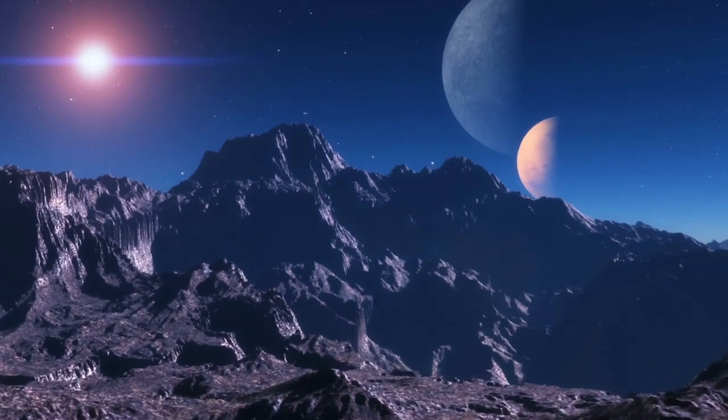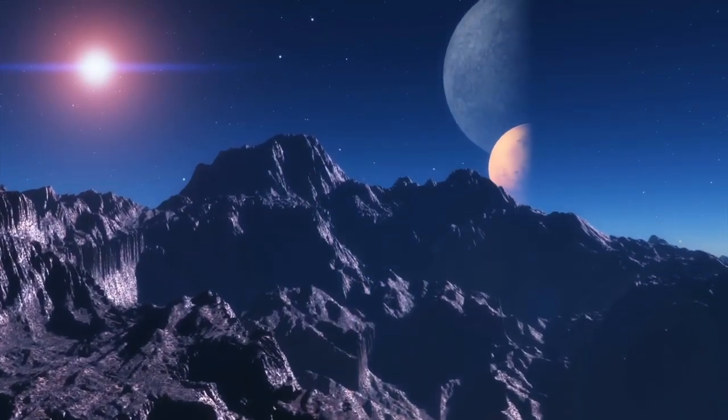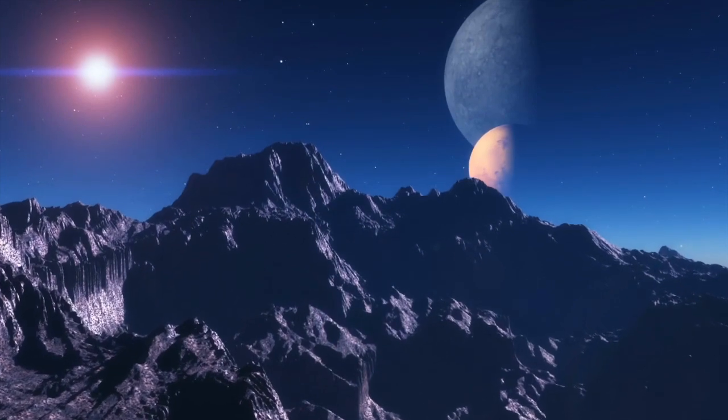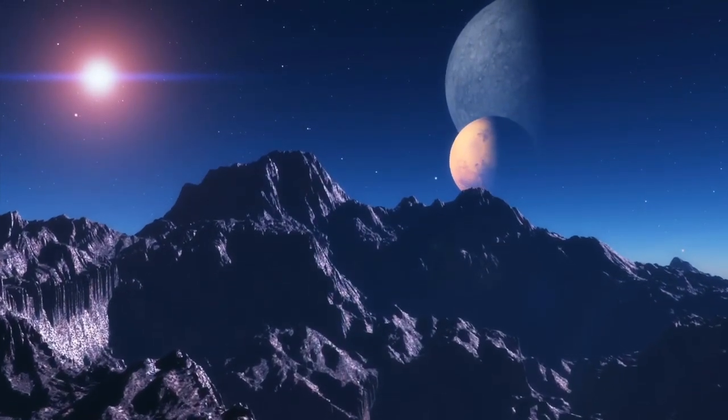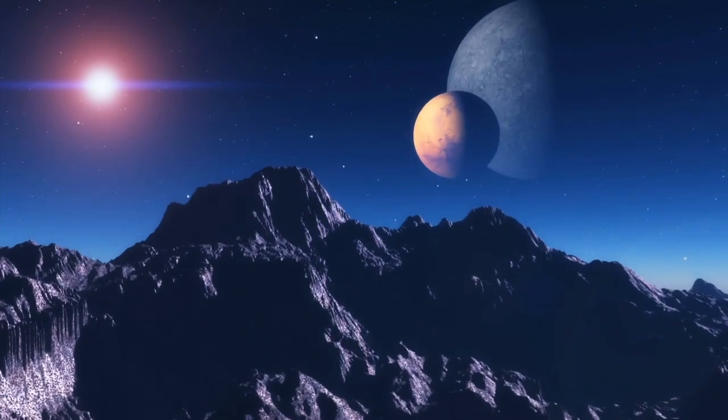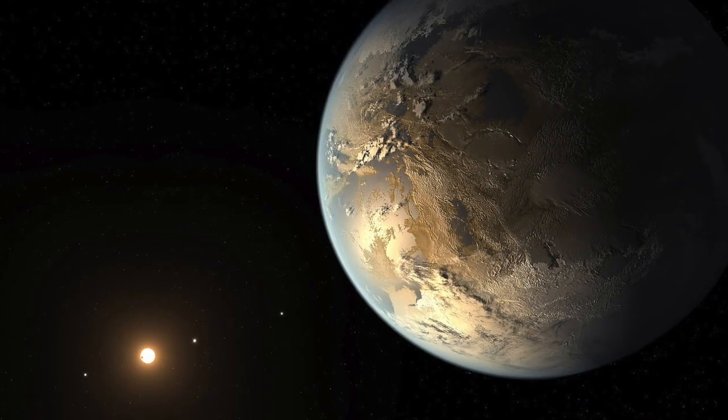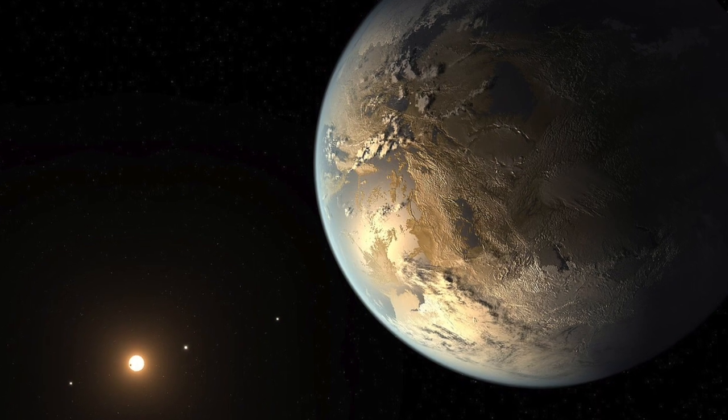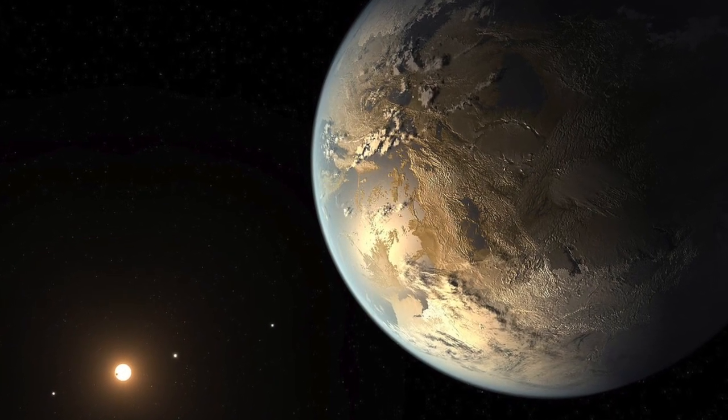In January 2015, Caltech astronomers Konstantin Batygin and Mike Brown announced new research that provides evidence of a giant planet tracing an unusual elongated orbit in the outer solar system. The prediction is based on detailed mathematical modelling and computer simulations, not direct observation.